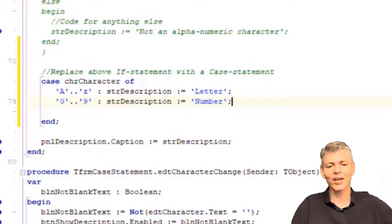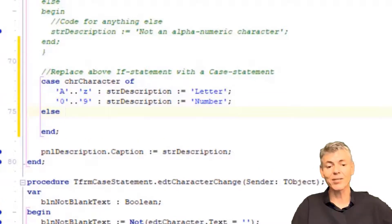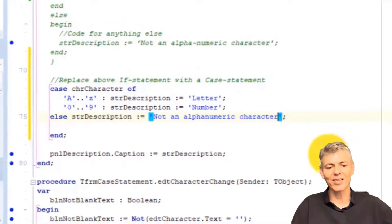This is the second option in the case list. If the selector, which is chrCharacter, is a numeric character, then we assign the word number to strDescription. Notice the number in the range is enclosed in inverted commas. That is because the numbers are still characters at this point. Go to the next line and type else strDescription := not an alphanumeric character. Any character that is not a number or letter will be handled by this else statement.